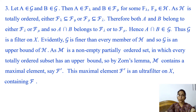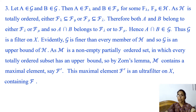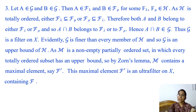Now we check the third property. Let A and B both belong to G. Then by definition of G, A belongs to F_lambda and B belongs to F_mu for some F_lambda, F_mu in H. As H is totally ordered, either F_lambda is contained in F_mu or F_mu is contained in F_lambda. Therefore, both A and B belong to either F_lambda or F_mu, and since they are filters, the intersection A ∩ B is in F_lambda or F_mu. Hence A ∩ B belongs to G. Thus G is a filter on X.